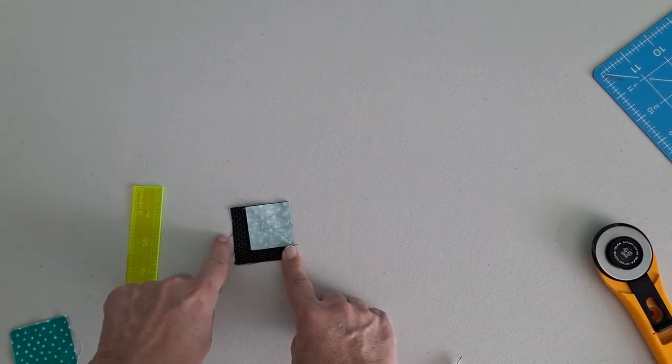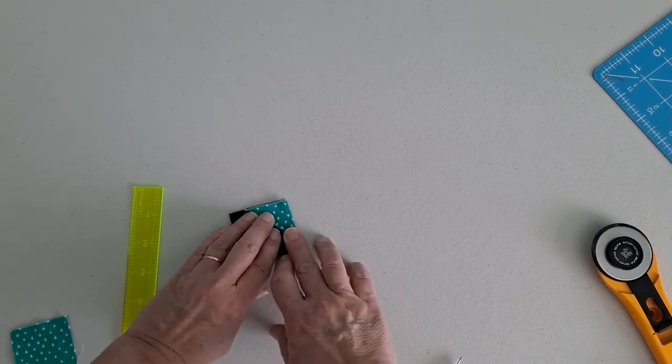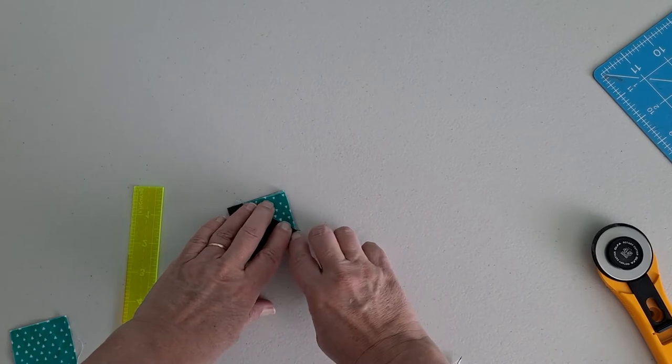Once you've sewn on the diagonal line, you're going to want to flip that and make sure the corner covers that whole edge.